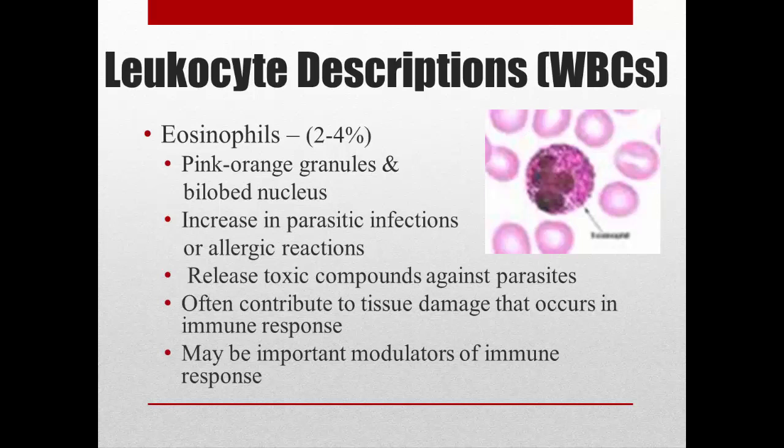Eosinophils have pink or orange granules because they stain pink or orange in the presence of di-eosin. We see an increase in eosinophils with parasitic infections and allergic reactions. Since a parasite is typically too big to engulf through phagocytosis — think of a parasitic worm — eosinophils release toxic compounds that digest the parasite from the outside in. However, these chemicals can't differentiate between the parasite and our own tissues, so they can cause tissue damage and inflammation. Eosinophils are also important modulators of the immune response, helping regulate it so it doesn't go too extreme.